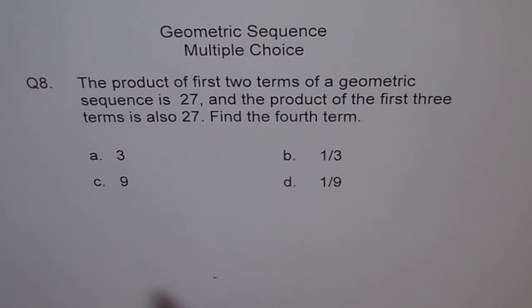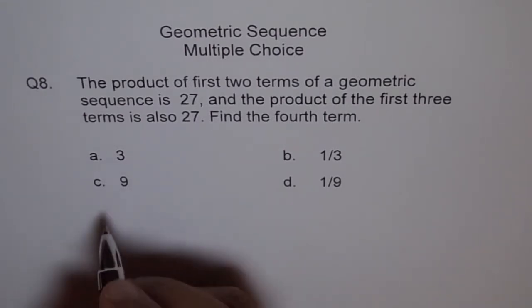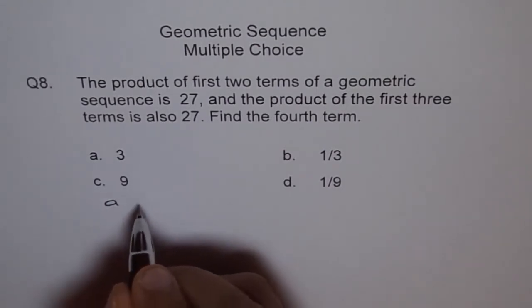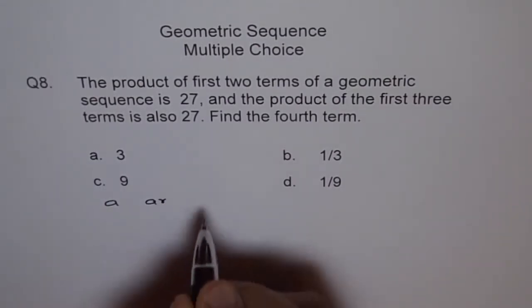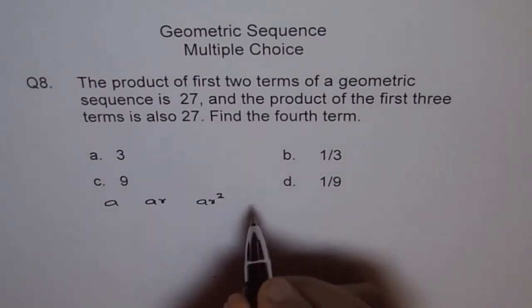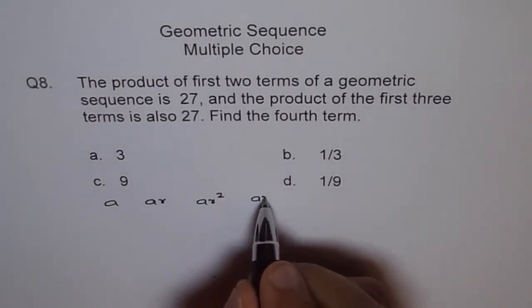Let's say if there are four terms in geometric sequence, then they should be like a, and then we have a times r, and then we have ar squared, and then we'll have ar cubed, right?